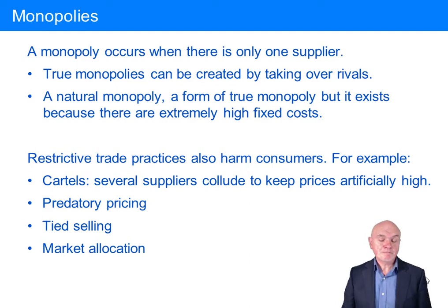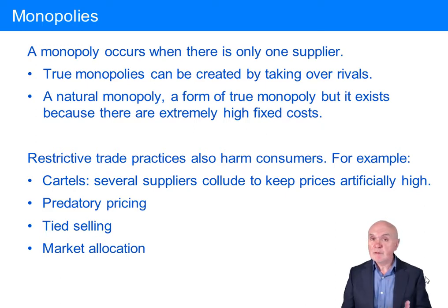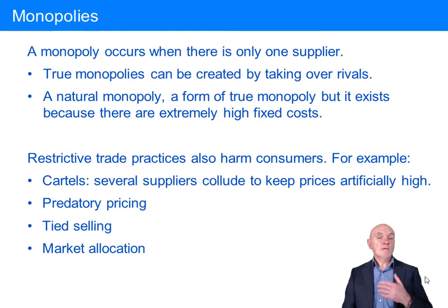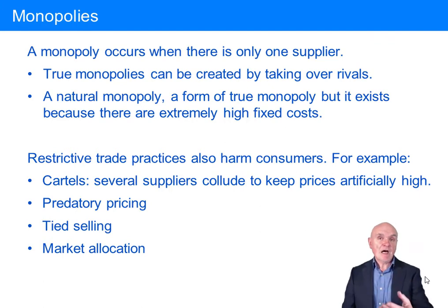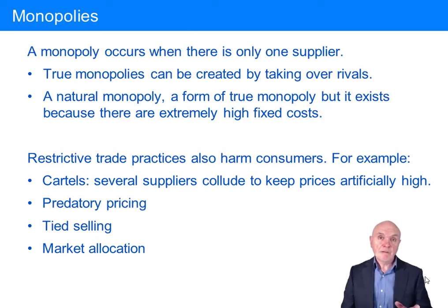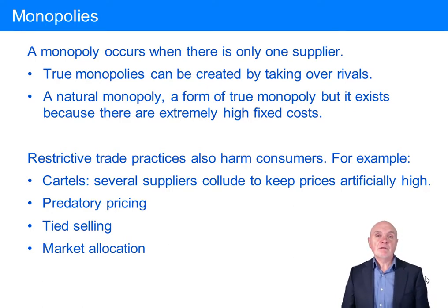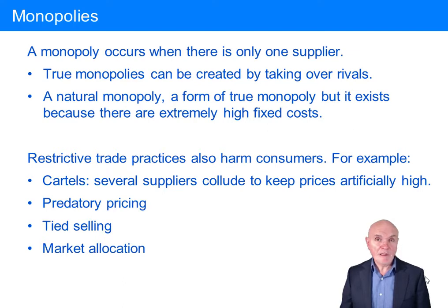And the first is a monopoly. A monopoly occurs where there is only one supplier. And if there is only one supplier, then of course this person could simply refuse to increase the output of goods and therefore could artificially hold the price much higher than it otherwise would have been. If other people could come into the market, if the price was high, that would suck other suppliers into the market and the price would go down until we had supply meeting demand. But a monopolist can hold the price artificially high and restrict the product only to people who are willing to pay an excessively high price for it.